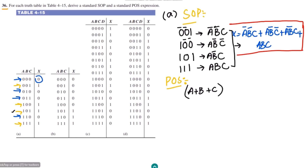The first zero term is 000, so those variables are already 0 and the sum A plus B plus C will give 0. The second term is 010, so in order to make it 0 I will have to make B equal to 0 as well. Therefore, A plus B complement plus C gives the second maxterm.